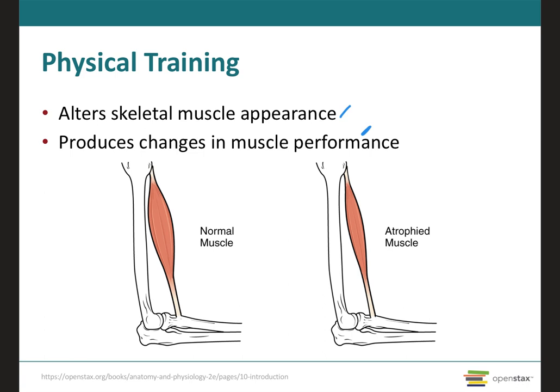Although muscle cells can change in size, new cells are not formed when muscles grow. Instead, structural proteins are added to the muscle fibers in a process called hypertrophy, where the cell diameter increases but there is no addition of new cells. These structural proteins are the ones we've already talked about: titin, myomesin, nebulin, and dystrophin, which contribute to the alignment, stability, elasticity, and extensibility of the myofibrils.